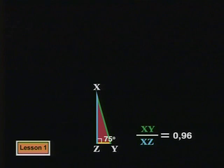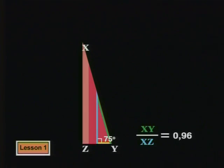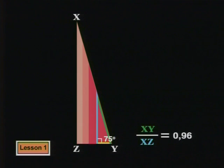If we test this idea with any other angle in a right-angled triangle, we will find the same thing. The ratio of the sides remains constant for any size of the angle.